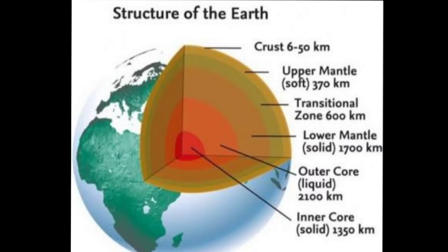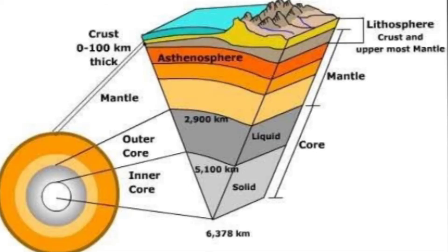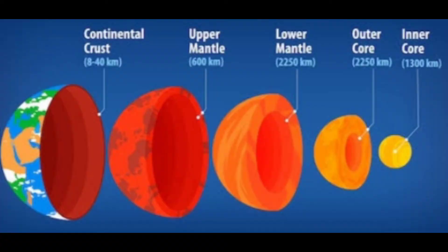Like an onion, the earth has several layers. The outermost layer, the earth's crust, has an average depth of about 40 km. Compared with the diameter of the earth, which is around 12,700 km, the earth's crust is very small. It is primarily made up of solid rocks. Below the crust is the mantle, reaching to a depth of about 2,900 km.